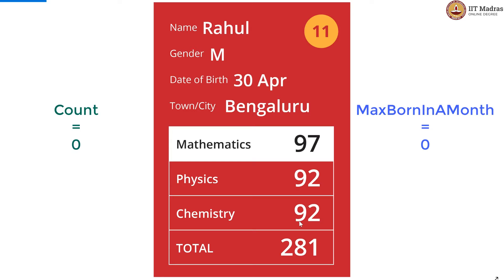This count we will keep incrementing for every card that we come across in a month. And whenever the month changes, we update max_born_in_a_month if it is lesser than the count.